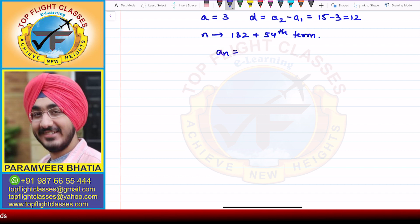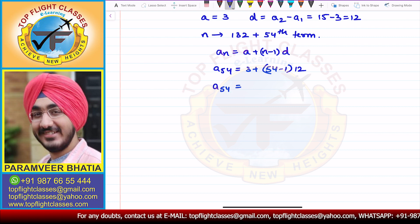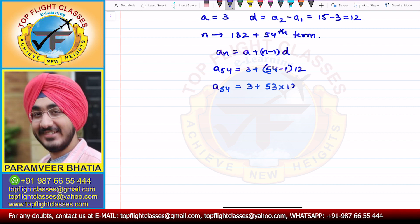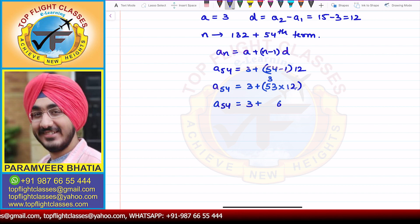The Nth term formula is AN equals A plus (N minus 1) times D. So A54, A is 3 in this case, 54 minus 1, and D is 12. So A54 equals 3 plus 53 into 12. A54 equals 3 plus, now 12 into 3 is 36, 3 goes up, 12 into 5 is 60 plus 3, 63. From here, I get that A54 is equal to 639.